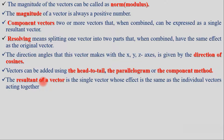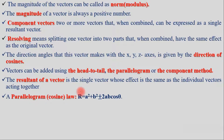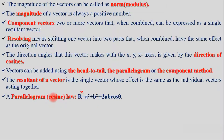Using the parallelogram law, the magnitude of the resultant R satisfies: R squared equals A squared plus B squared plus 2AB cosine of the angle. This is how we apply the parallelogram rule to find the resultant vector.